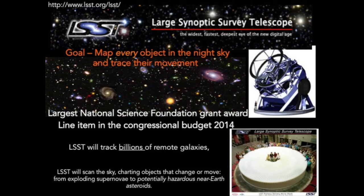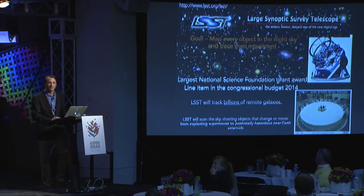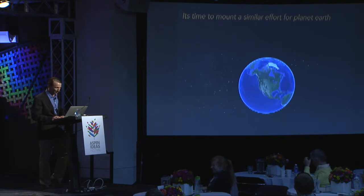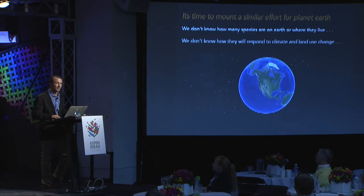What I wanted to start with, to put the issue of climate change in perspective — especially as we think about biology and the role of climate change — is to highlight this one project that was just funded: the LSST, the Large Synoptic Survey Telescope. The goal of this telescope is to map every object within the night sky, repeatedly, tracking any movement. This is the largest grant the National Science Foundation awarded — a line item in the congressional budget in 2014. Not only will this project track billions of remote galaxies, but hopefully identify impending doom coming from asteroids and comets. So what's interesting is that if we turn our telescopes back to Earth, I think it's time to mount a similar effort for planet Earth itself, in particular the biological side.